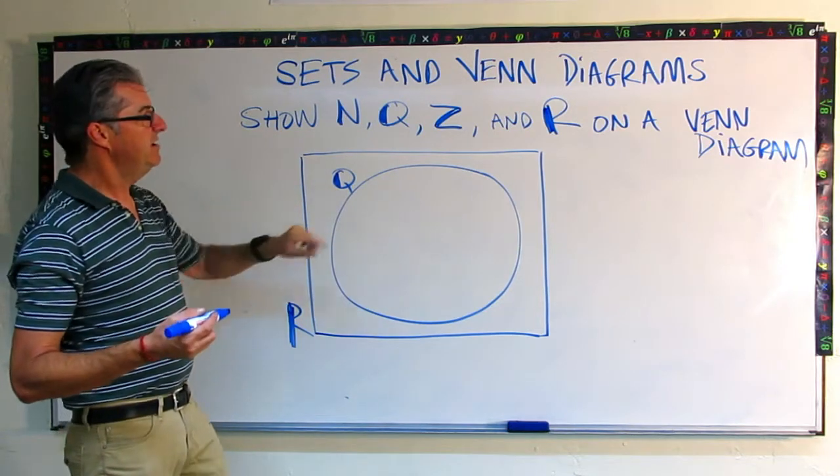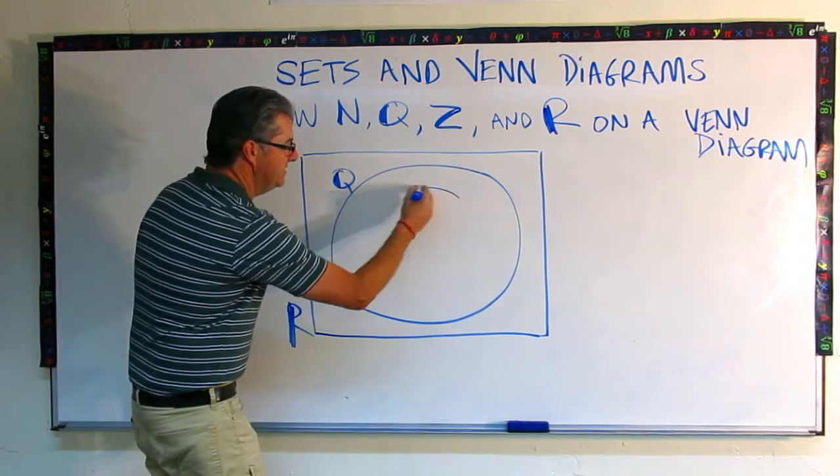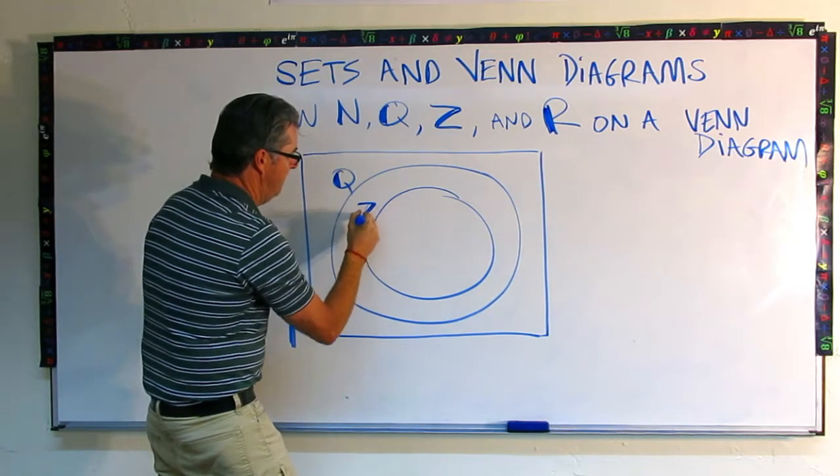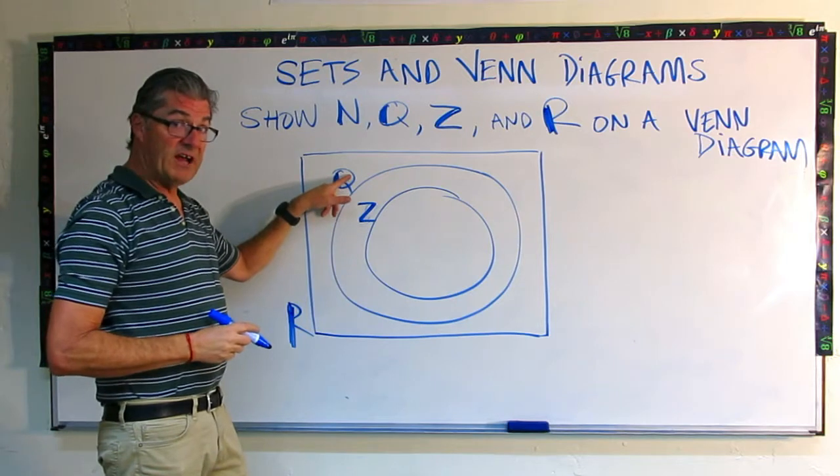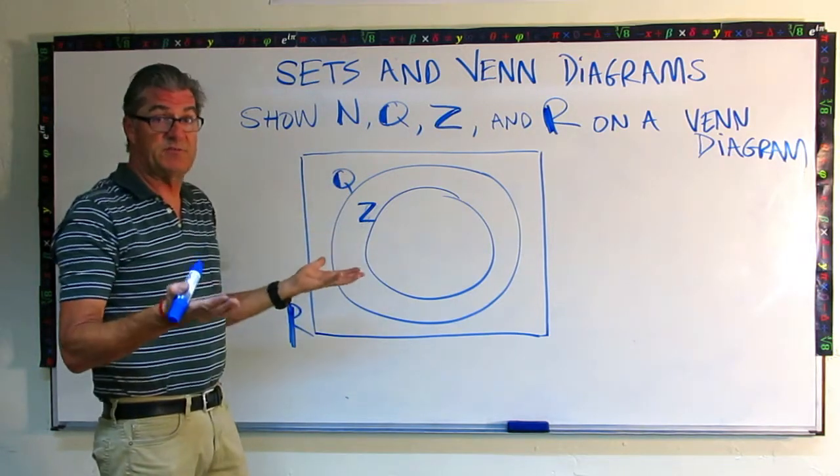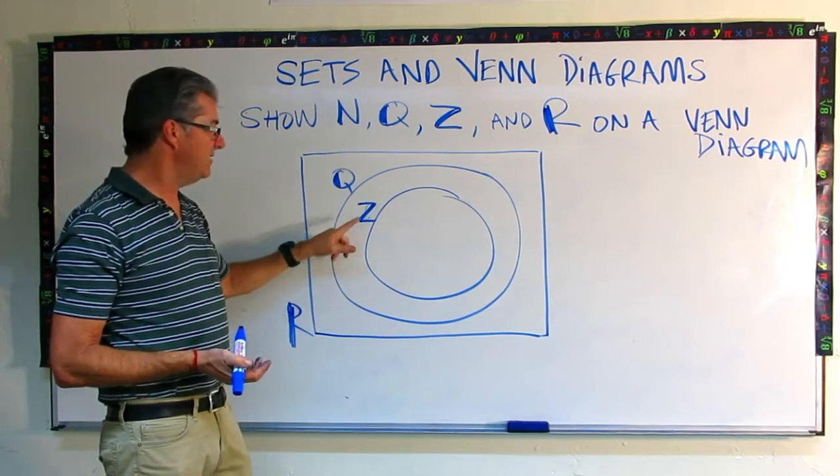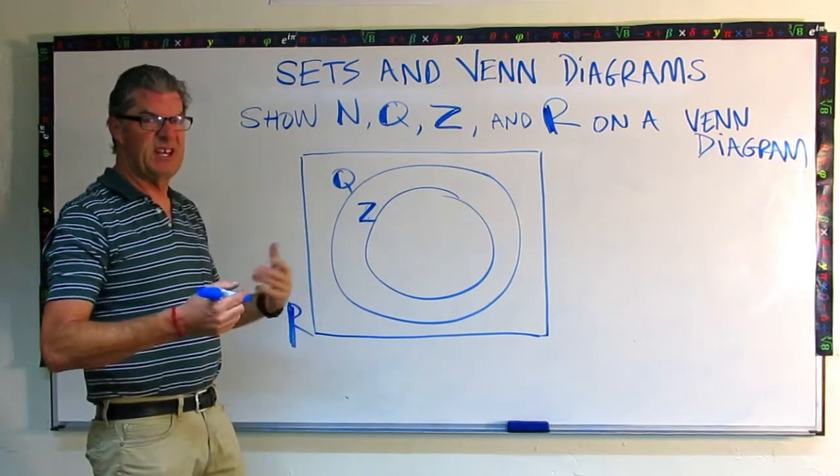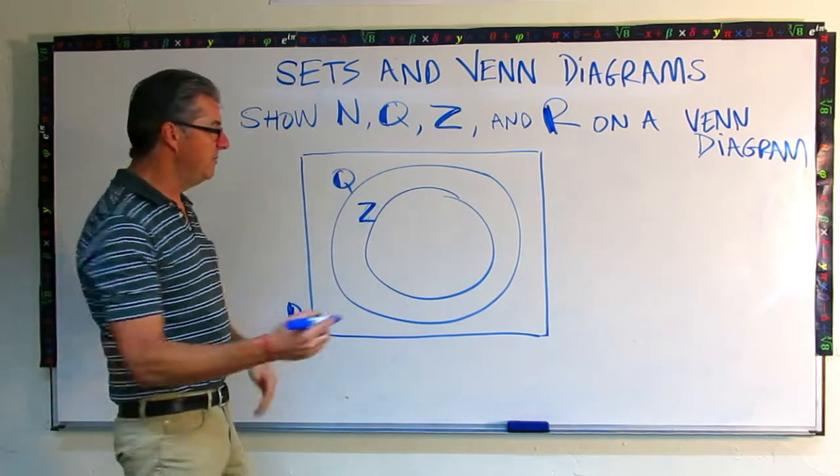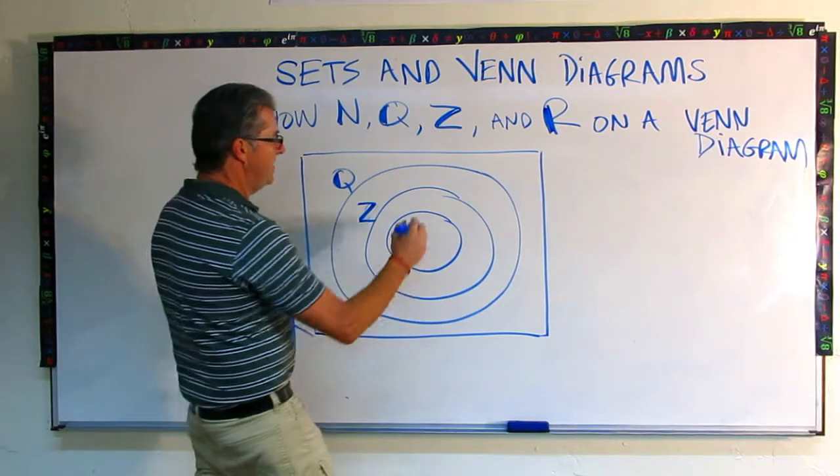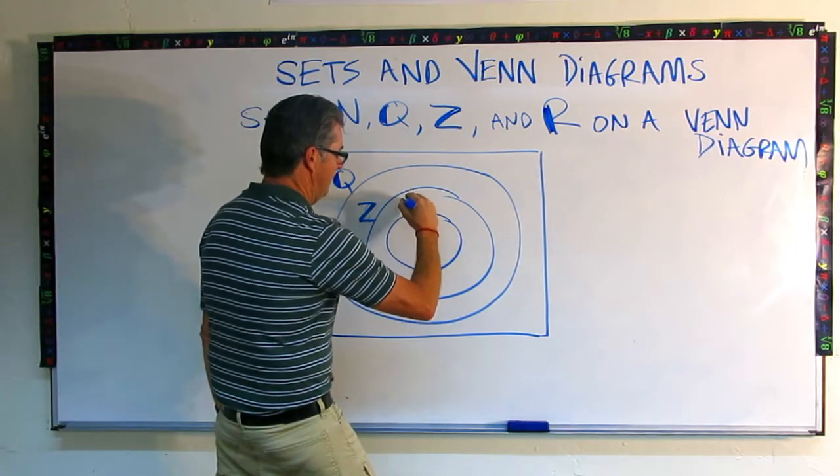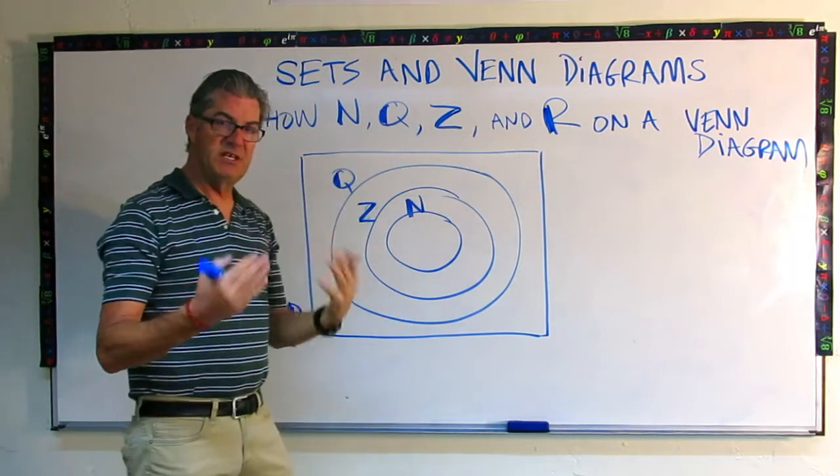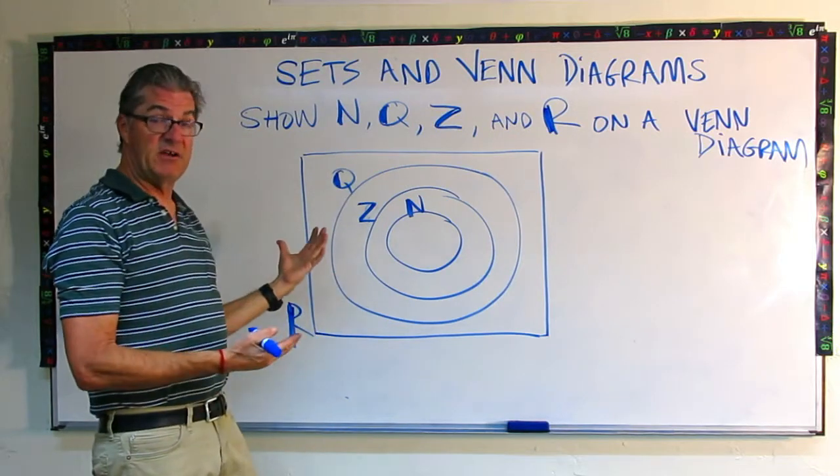So Q is rational numbers. Now the next least restrictive set would be our integers. And they will go inside rational numbers. And that's the Z. And so some numbers are rational, but they're not integers, like one half. That's a rational number. It's being expressed as a fraction, but it's not an integer. So that would go right in there. And then our last, our most restrictive set is the natural numbers. That's like the counting numbers, zero, one, two, three, going all the way in the positive direction. So that's the last circle inside, and that's N.